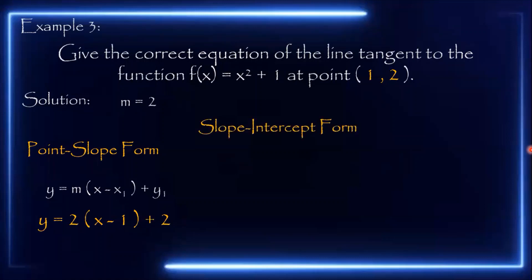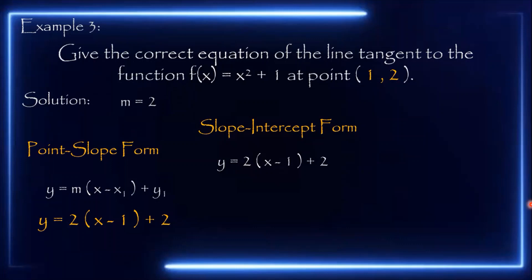Next, we convert to slope-intercept form by transforming y = 2(x − 1) + 2. We distribute 2 to x minus 1: 2 times x gives 2x, and 2 times negative 1 gives negative 2, then copy plus 2. Combining negative 2 and positive 2 gives y = 2x. This is the slope-intercept form of the tangent line.